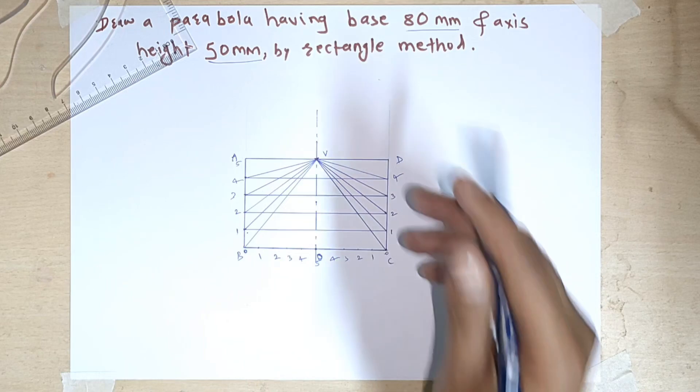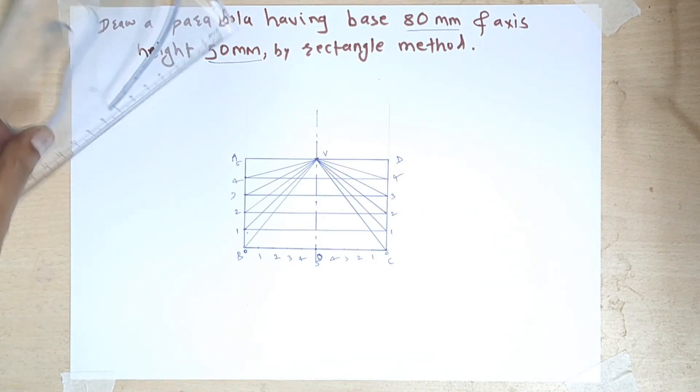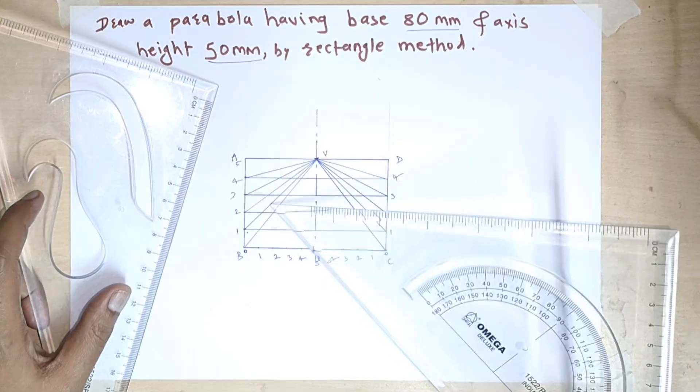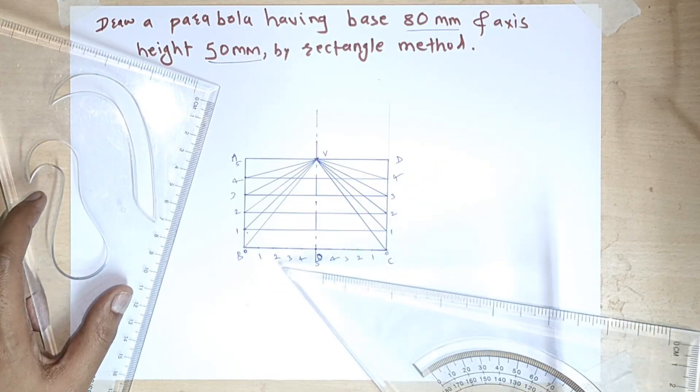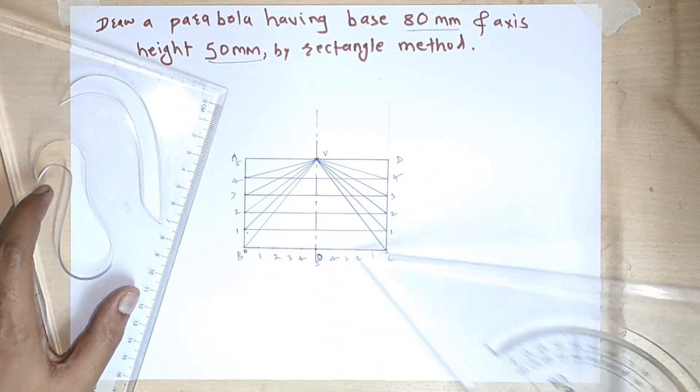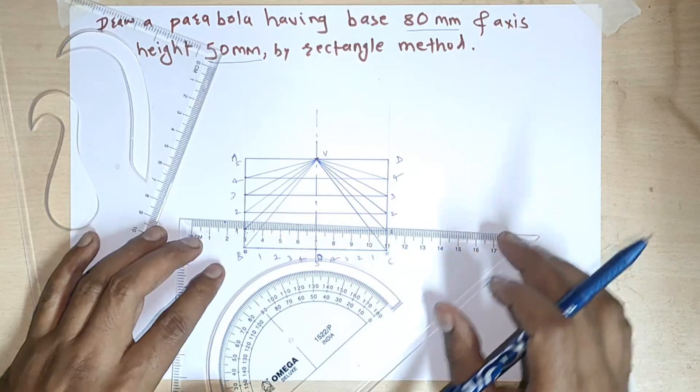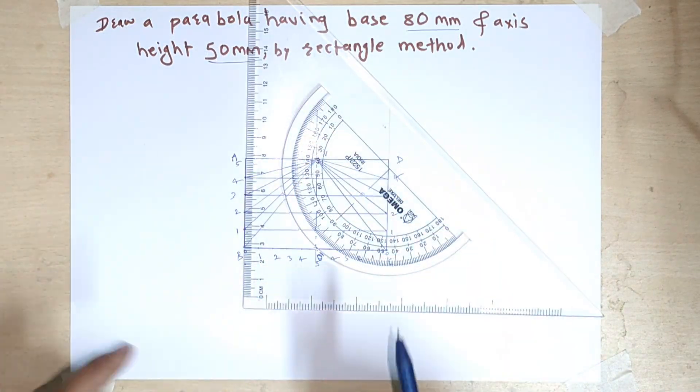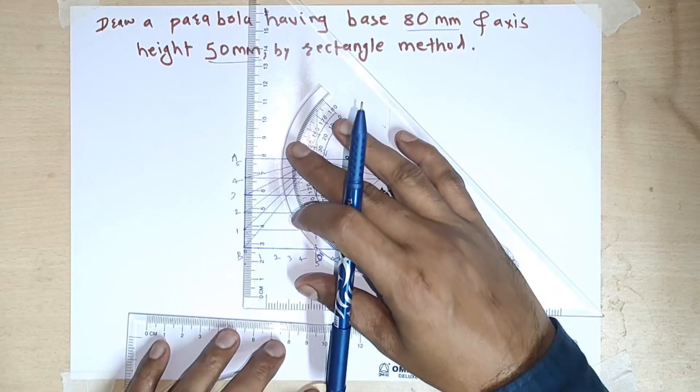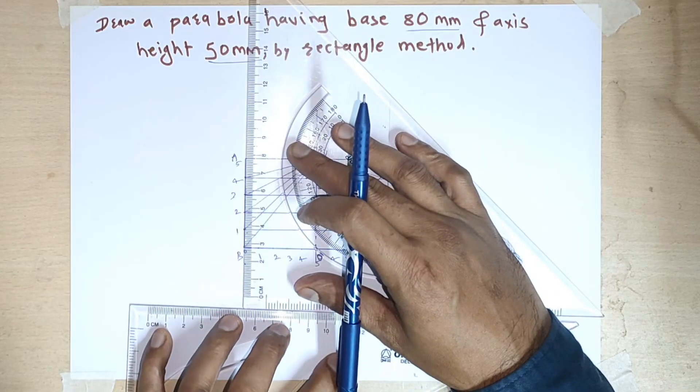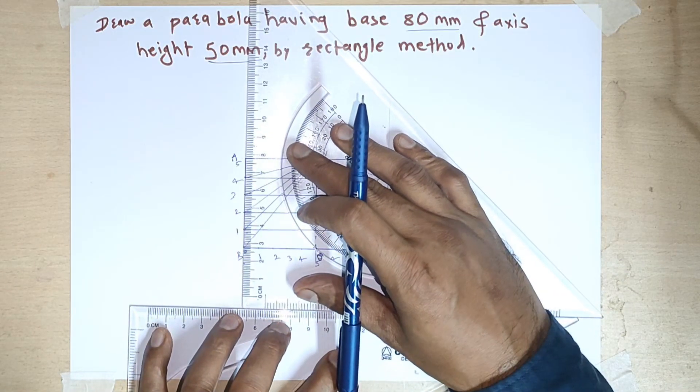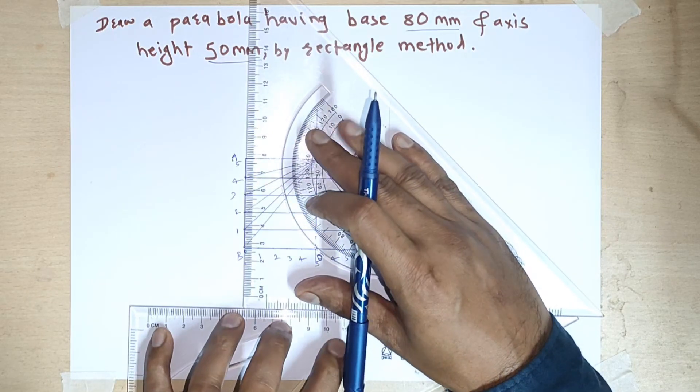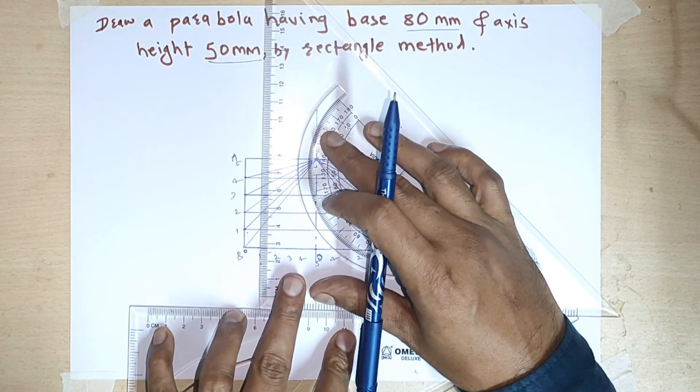So we have connected this point 1 to V, 2 to V, 4 to V from both sides. Now we have to draw the vertical lines from this 1, 2, 3, 4, 5, 6. We have to draw vertical lines. Set the ruler vertically because every point has a vertical line passing through it.